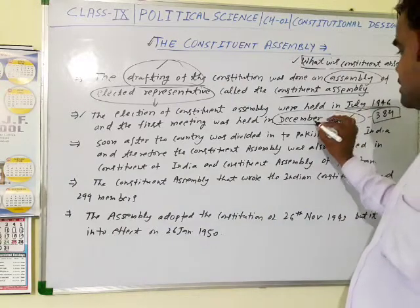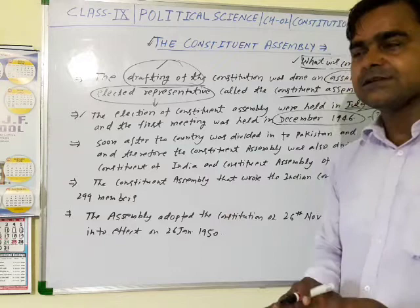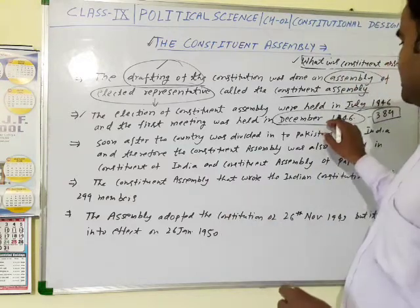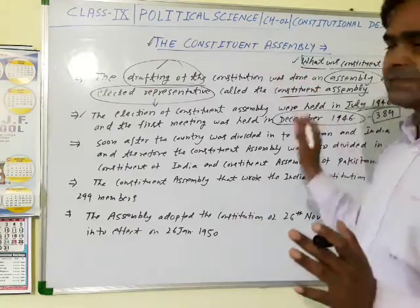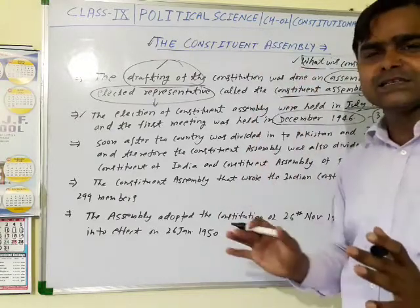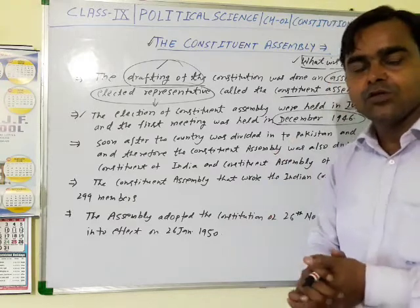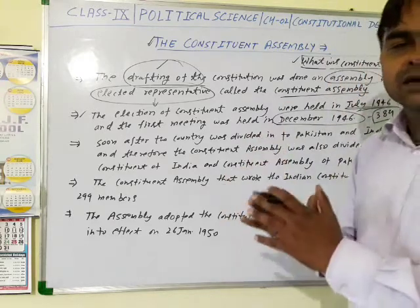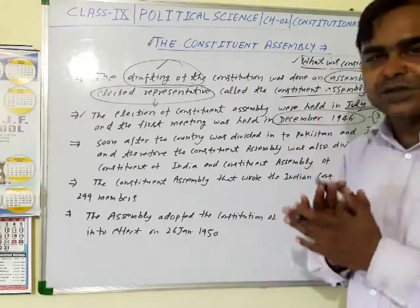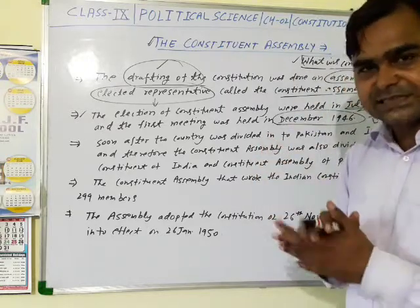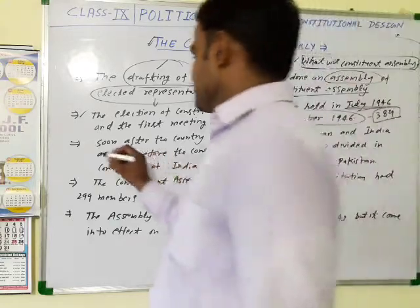Dr. Rajendra Prasad was declared as the President of the Constituent Assembly. All the elected members of the Constituent Assembly selected Dr. Rajendra Prasad as their President. So the President of the Assembly was Dr. Rajendra Prasad.